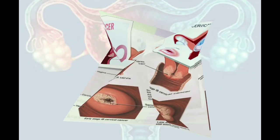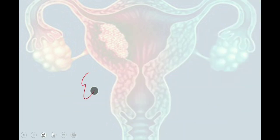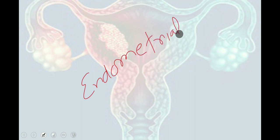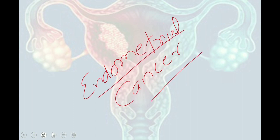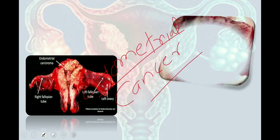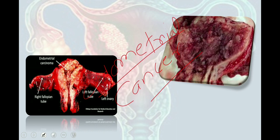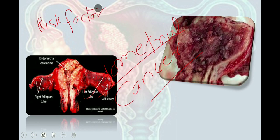To rule out the possibility of endometrial cancer, we have to ask questions to assess the risk factors of CA endometrium. Risk factors include obesity, nulliparity, low parity, early menarche, and late menopause. These sorts of questions need to be asked from the patient and confirmed during history taking.